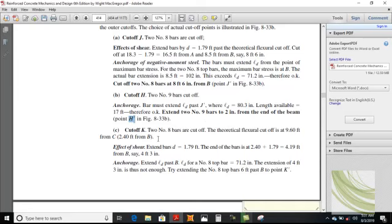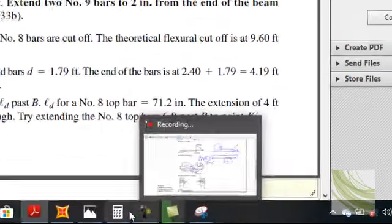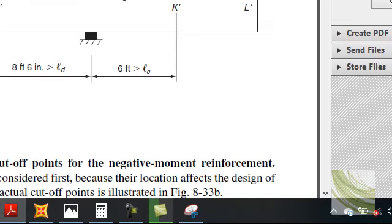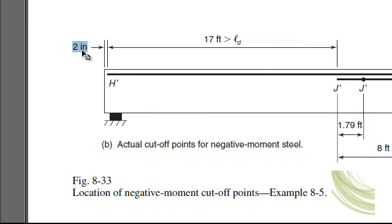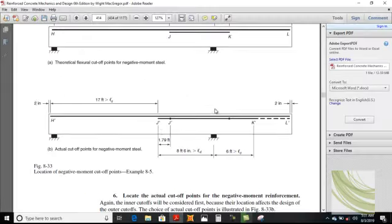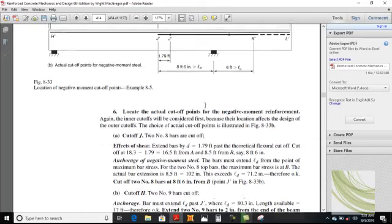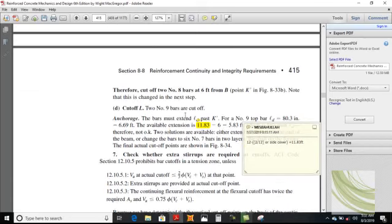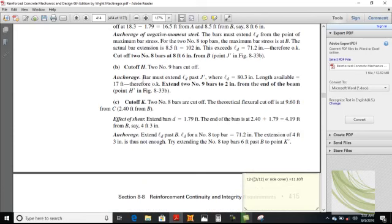Extend two number 9 bars to 2 inches from the end of the beam. H dash will be 2 inches inside because 2 inches is the cover for the hook/tail. This 17 feet is greater than 80 inches and is measured from the actual cut-off point, not from the support center. The two bars cut there must extend for a distance of 80 inches. Now the next cut-off point is K.